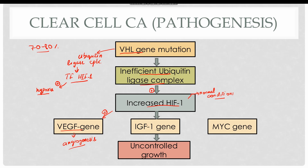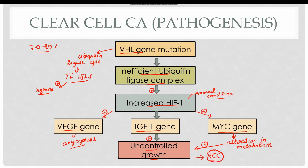HIF1 also increases the expression of insulin-like growth factor 1 (IGF1), which results in uncontrolled growth. Moreover, MYC gene is also activated by HIF1, and MYC causes alterations in metabolism to favor uncontrolled growth. All these factors ultimately result in the formation of clear cell type renal cell carcinoma.